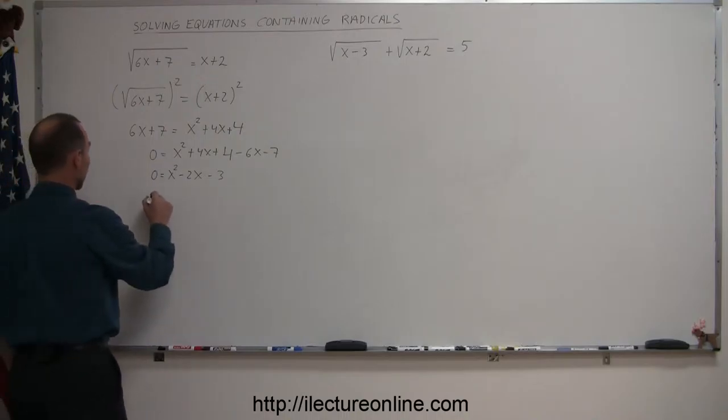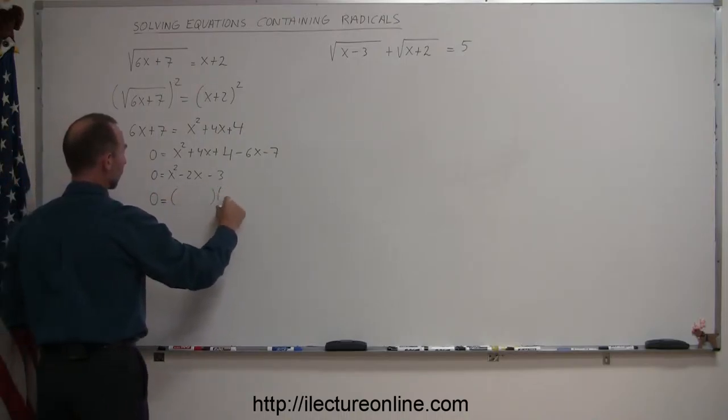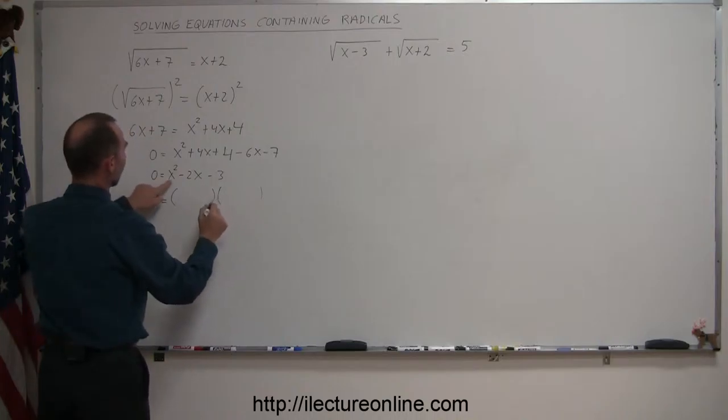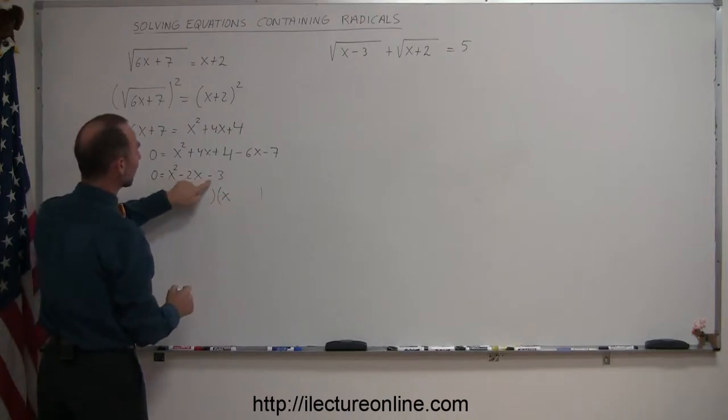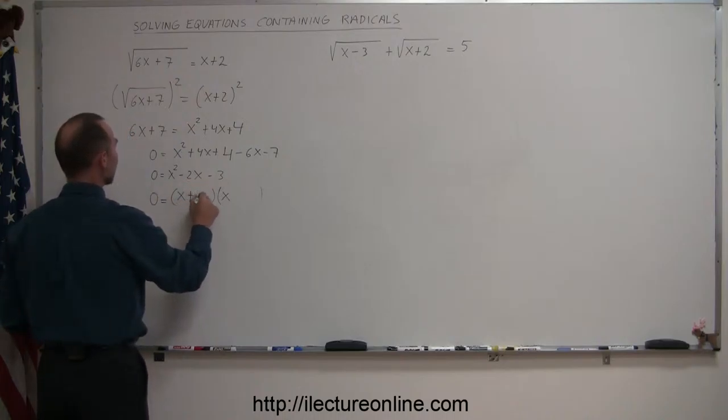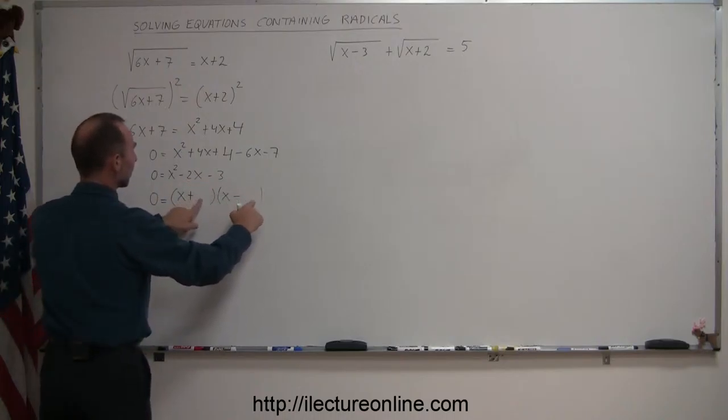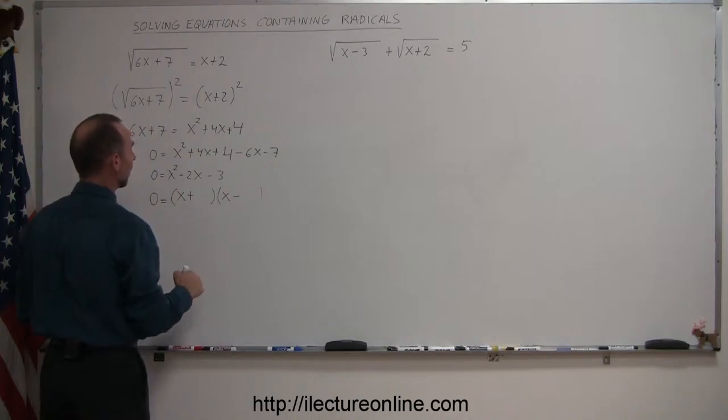If it is, we should be able to write it as a product of two binomials. So we'll put down the parentheses. To get the x squared, you need an x and an x. Since this is negative and this is negative, one of the numbers is positive and one of the numbers is negative. So when you multiply these two, you get a negative result. The largest of the two should be negative, so that should be a 3.